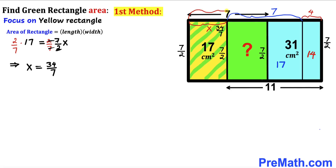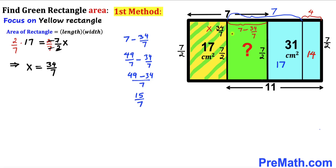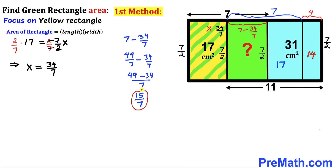The whole horizontal distance is 7 and the yellow width is 34/7, so the green rectangle's width is 7 minus 34/7. Simplifying, that turns out to be 15/7 cm.